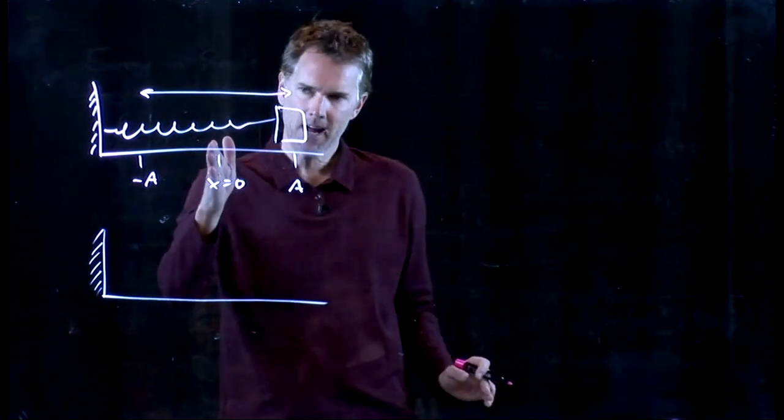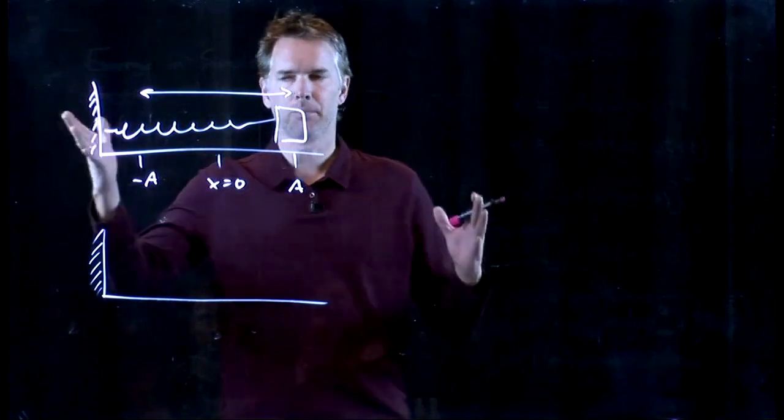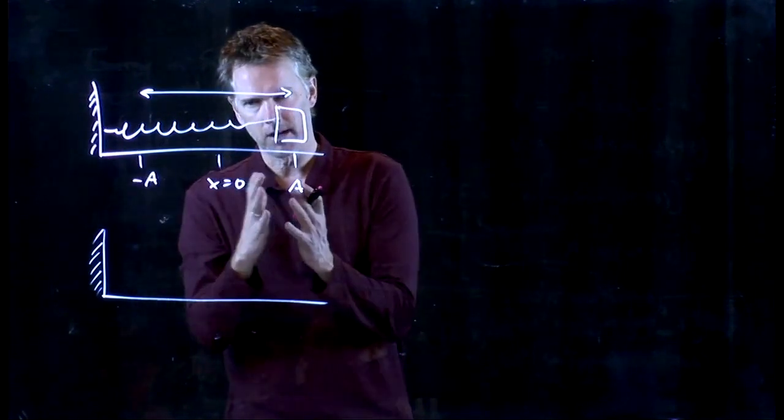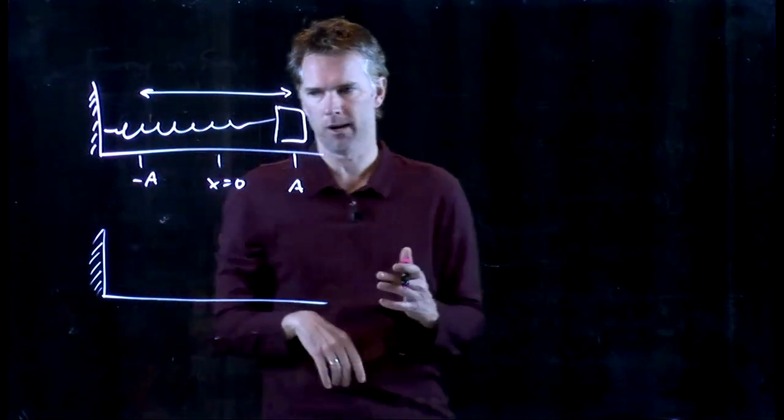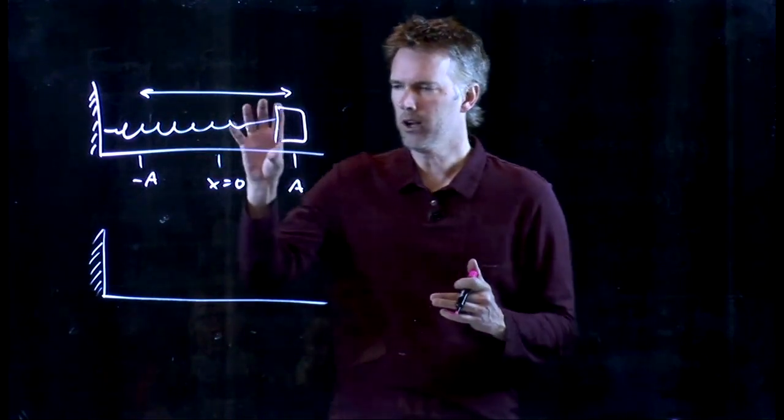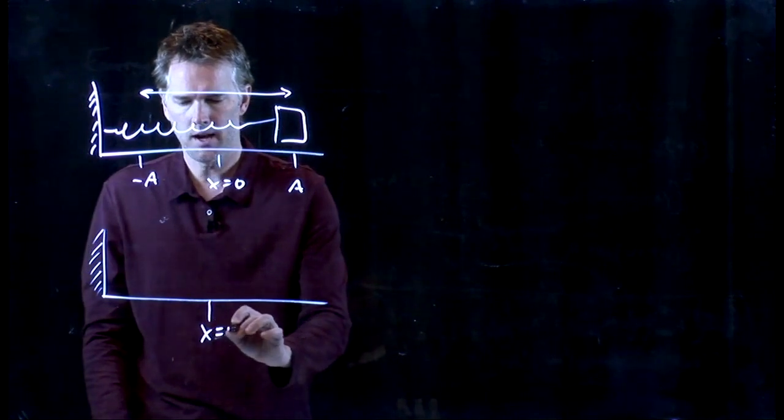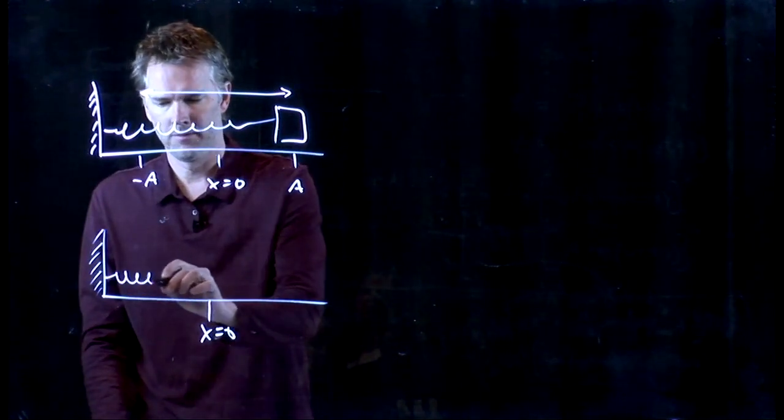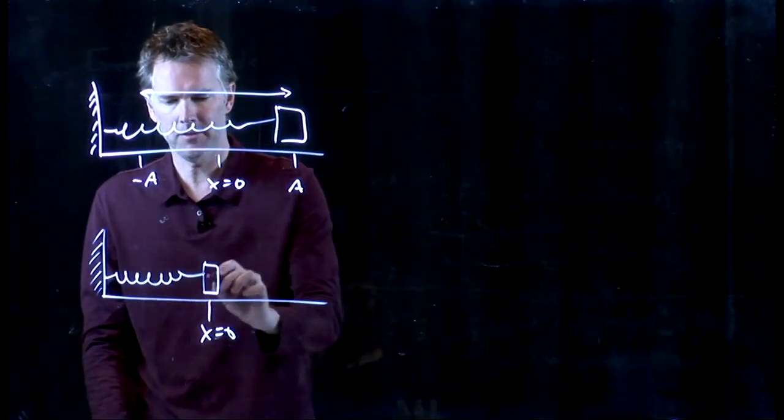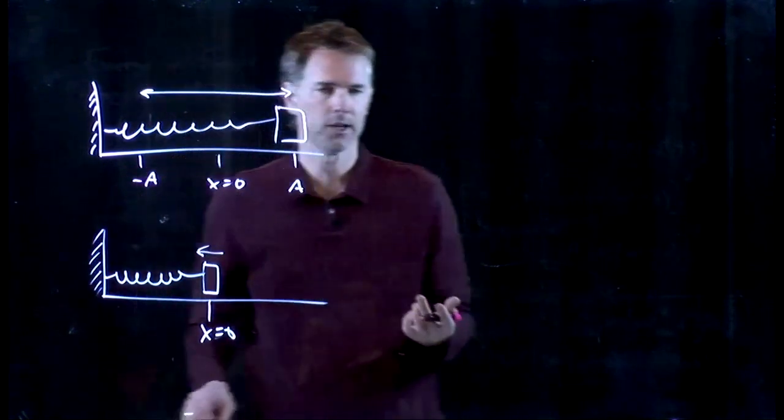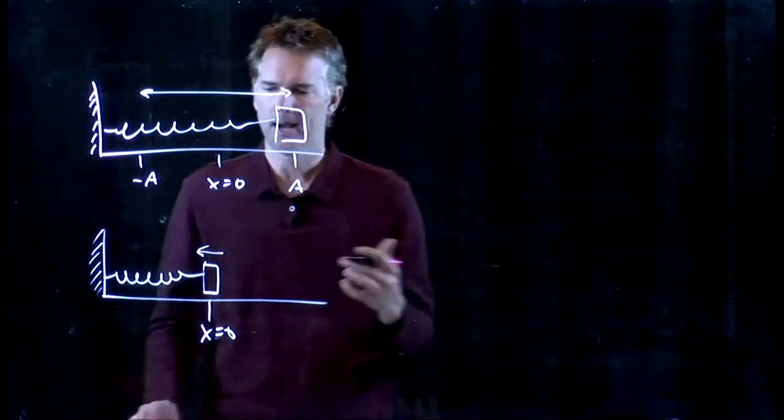And once it gets past x equals zero, the spring is starting to compress, and so the spring is pushing back the other way. So clearly Vmax has to be when x equals zero, because as soon as you pass it, it's going to switch pushing back the other way.